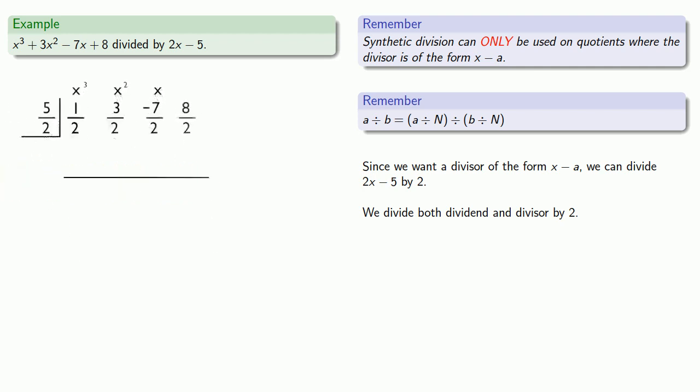And now we're go for synthetic division. Drop the leading coefficient. Multiply by 5 halves. We'll need to add to the next column, which means adding two fractions together. So we'll find a common denominator and add.